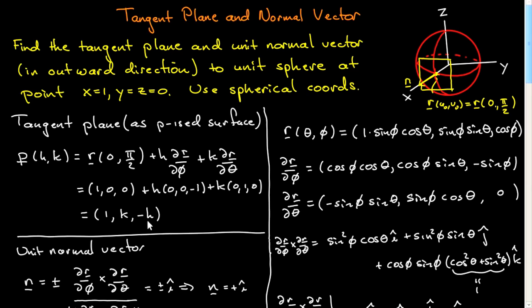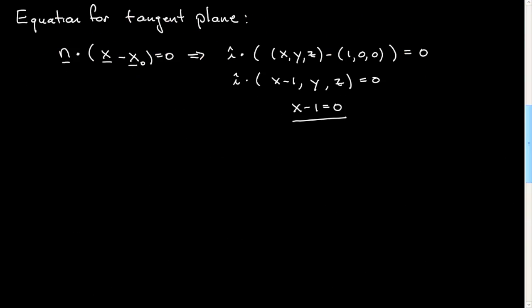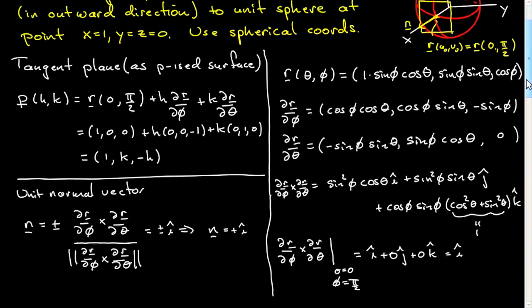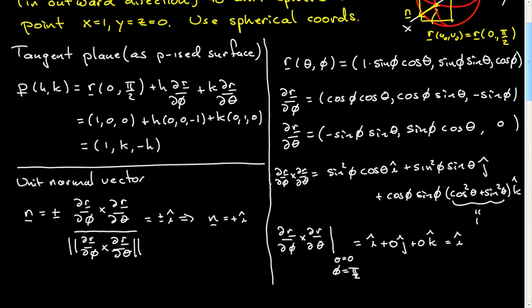That's a pretty standard calculation of the tangent plane done two ways. Both are valid representations of the tangent plane — you can use either unless told otherwise. The unit normal vector is always computed this way; it can be messy at times, but it's not too bad. And that's the example.